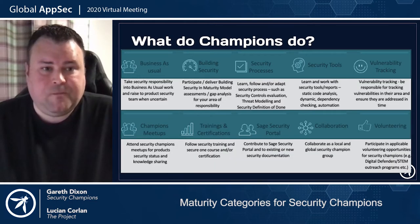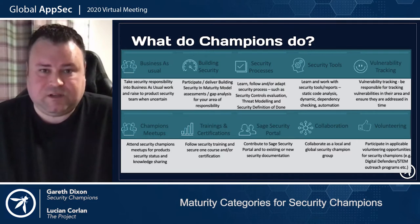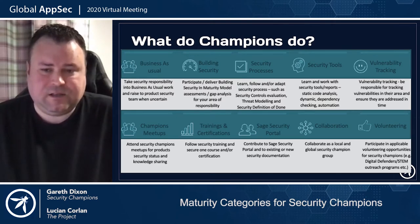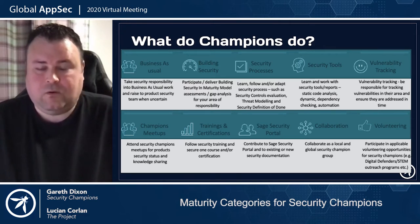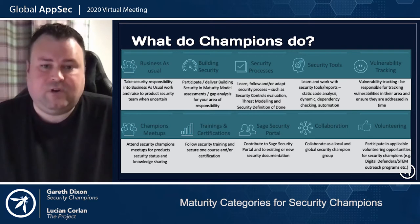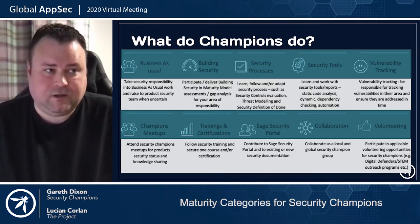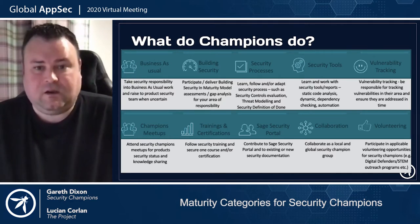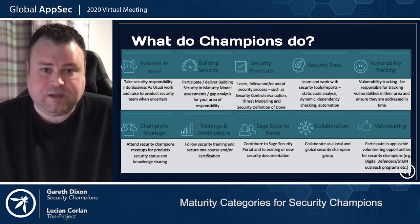What do security champions do? Essentially, we take responsibility for bringing security milestones into the development lifecycle. If there are any issues, we escalate them to the security team. We also use maturity models and perform gap analysis to see if there are areas we need to focus on to improve our security maturity. We learn about internal processes relating to security controls, threat modeling, and the definition of done, and ensure that engineering teams are using and adhering to those standards.